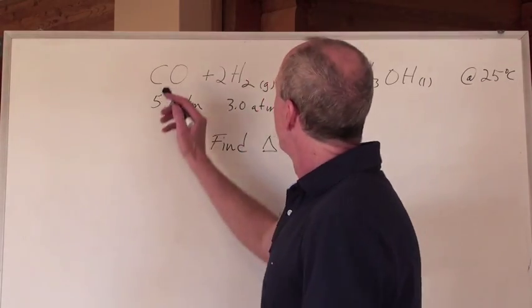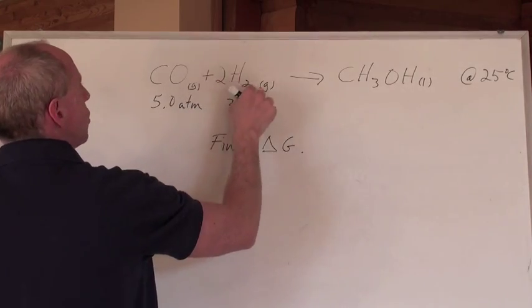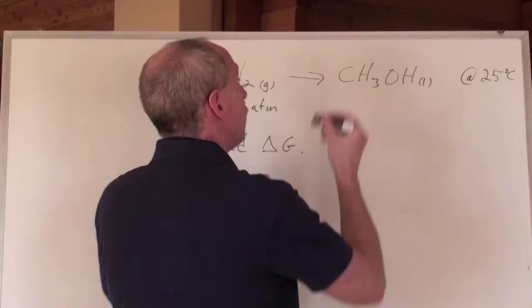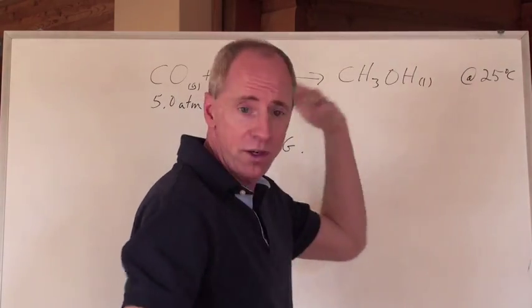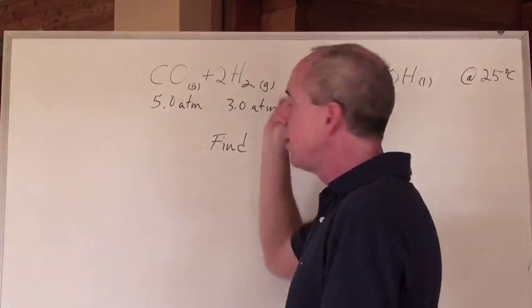So you're given another question. You've got some carbon monoxide gas and you're going to react it with H2 gas, and just like in the previous question where we combusted methanol, this is going to form methanol at 25 degrees Celsius. So you're going, hey, that's great, what's the question? Find the delta G.